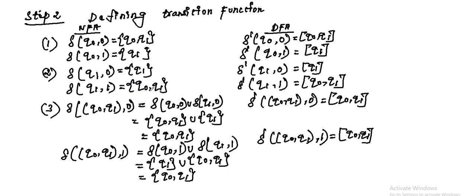The answers Q1 and {Q0, Q1} are repeated, so we cannot proceed further. We already performed Q0, Q1, and Q1. Next is {Q0, Q1}. For del of {Q0, Q1} with input 0: do the extended function — del(Q0, 0) union del(Q1, 0) equals {Q0, Q1} union {Q1} equals {Q0, Q1}. For input 1: del(Q0, 1) union del(Q1, 1) equals Q1 union {Q0, Q1} equals {Q0, Q1}. So del dash({Q0,Q1}, 0) equals {Q0, Q1} and del dash({Q0,Q1}, 1) equals {Q0, Q1}.